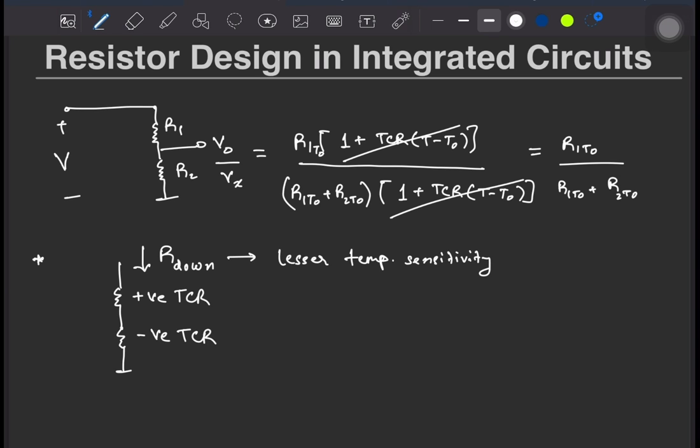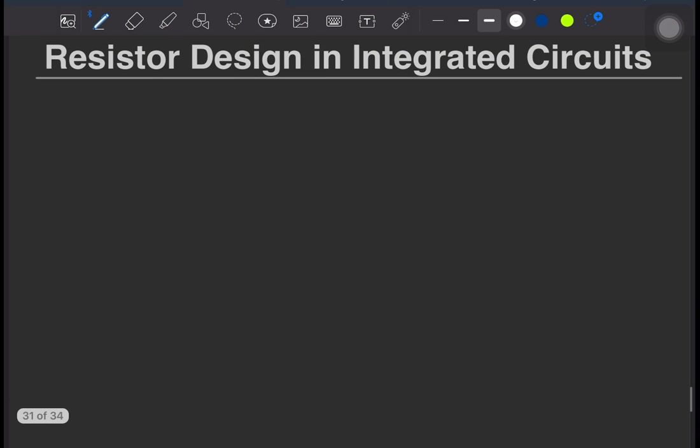Now, before looking at more parameters, let's first understand why the resistor in ICs are three terminal structures through the example of a polysilicon resistor.